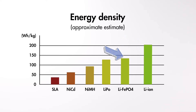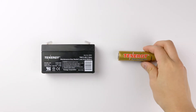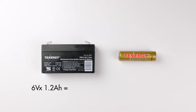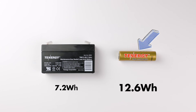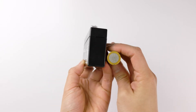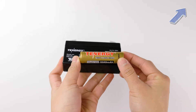After lithium ion, we have lithium iron phosphate, lithium polymer, nickel metal hydride, nickel cadmium, and last is sealed lead acid battery, which has the lowest energy density. For example, the battery on the left is a sealed lead acid battery — 6 volt with a capacity of 1.2 amp hours, giving it 7.2 watt hours. The one on the right is a lithium ion battery with 12.6 watt hours. It has a higher energy density because it's double the power output but only one-fourth the size. If you'd like to learn more about volts, amp hours, and watt hours, check out the linked video.